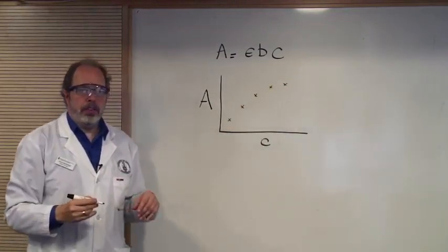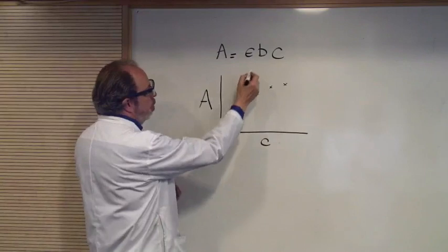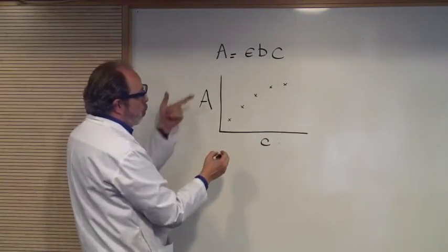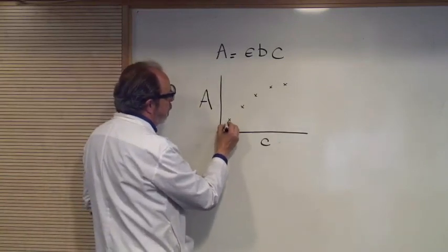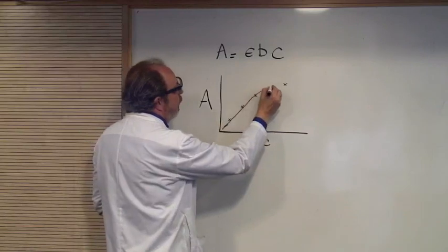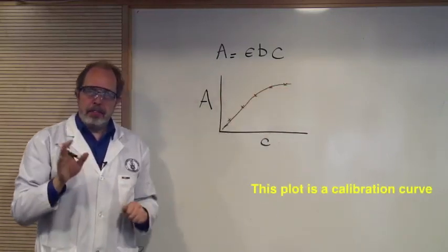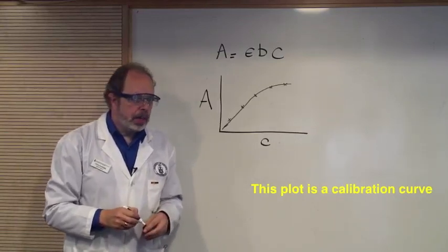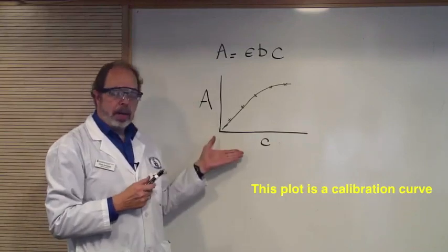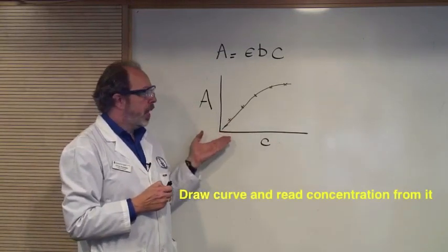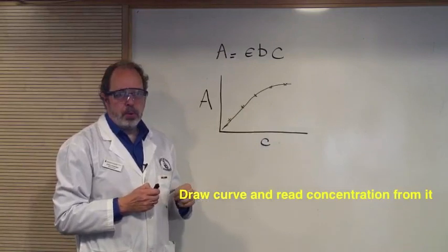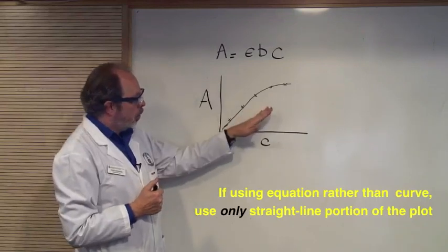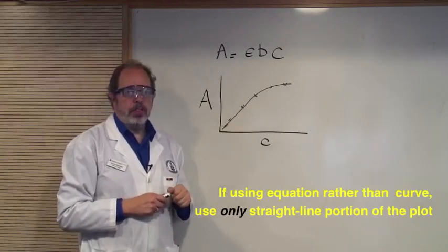As you can see, we're going to get a curve here. Beer's law says this will be a straight line. It's y equals mx plus b. And the slope will be epsilon b. Now, the first part of this line is indeed a straight line. But after that, it starts to flatten out. That frequently happens at higher concentration. It means that Beer's law is not strictly being observed, but you've still got a calibration curve. And if you can draw this, you can use the data even in the curved portion. However, if you want to use a mathematical relation of Beer's law, A equals epsilon bc, you can only use the straight line portion of the curve.